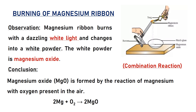When we burn the magnesium ribbon, the observation is that magnesium ribbon burns with a dazzling white light and changes into white powder. The white powder is called magnesium oxide. Magnesium reacts with atmospheric oxygen while burning and produces magnesium oxide. The color of the magnesium oxide is white. Conclusion: magnesium oxide is formed by the reaction of magnesium with oxygen. Equation: 2Mg + O₂ → 2MgO.